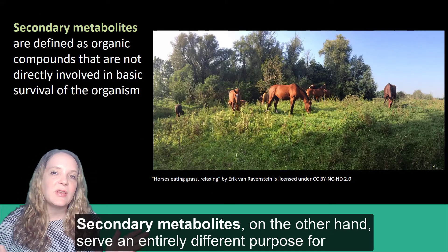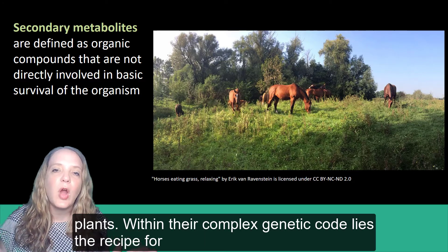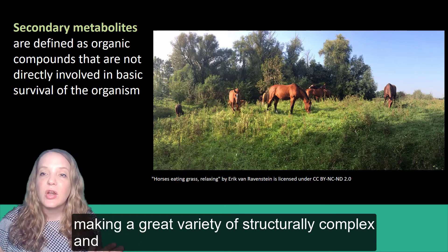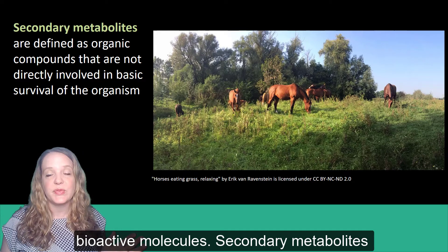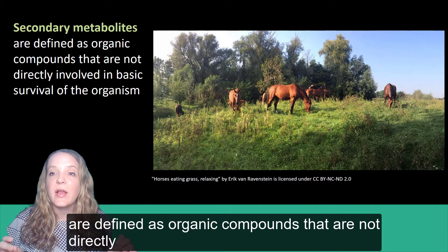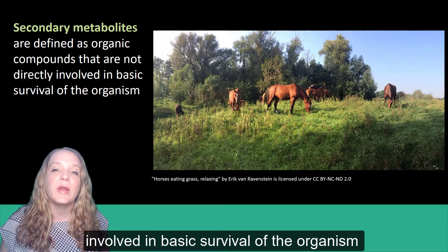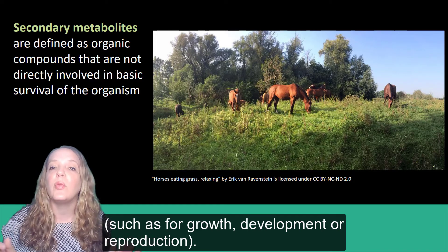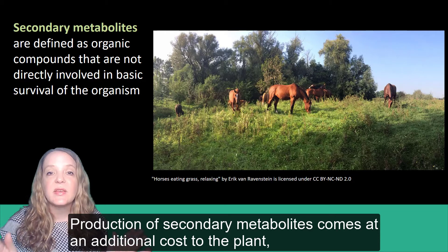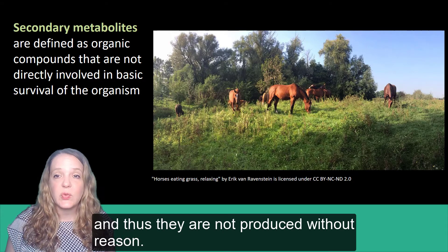Secondary metabolites, on the other hand, serve an entirely different purpose for plants. Within their complex genetic code lies the recipe for making a great variety of structurally complex and bioactive molecules. Secondary metabolites are defined as organic compounds that are not directly involved in the basic survival of the organism, such as for growth, development, or reproduction. Secondary metabolites come at an additional cost to the plant, and thus they are not produced without reason.